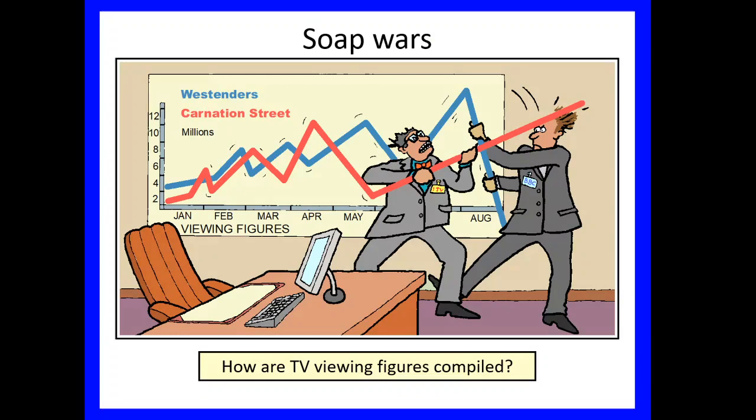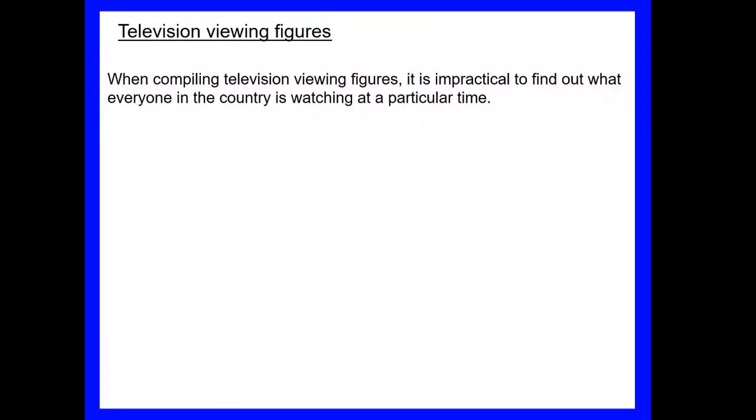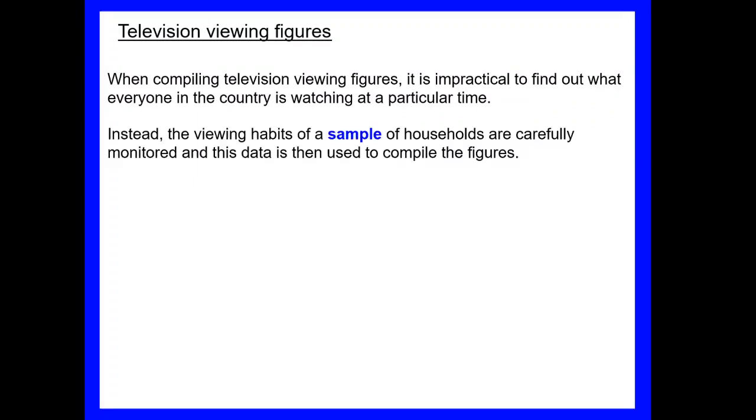Okay, so looking at sampling then, why do we need to do sampling? So how would we compile TV viewing figures? We certainly don't go around and ask every single person in the country what it is they're watching, so we need to have a sample. So a sample is taken of different households who are monitored and that data is then used to compile those figures. Very much like you're using the computer as well, you can select whether or not companies are given feedback about whether you're using their sites and the data that's collected, the same on your mobile phone.